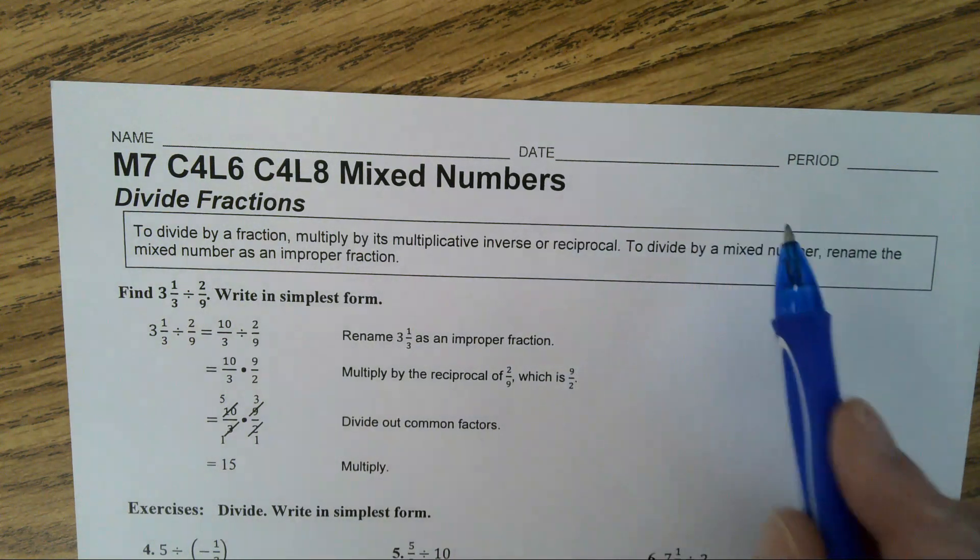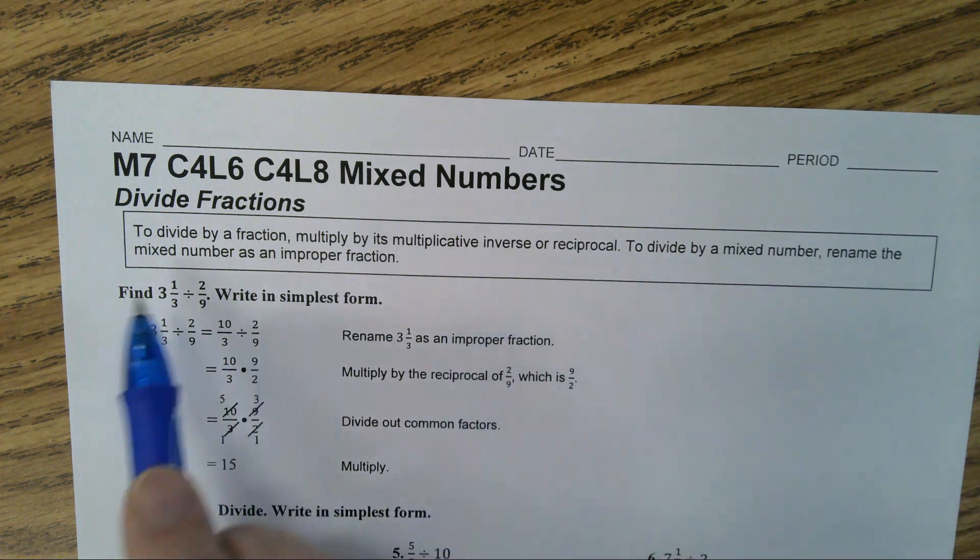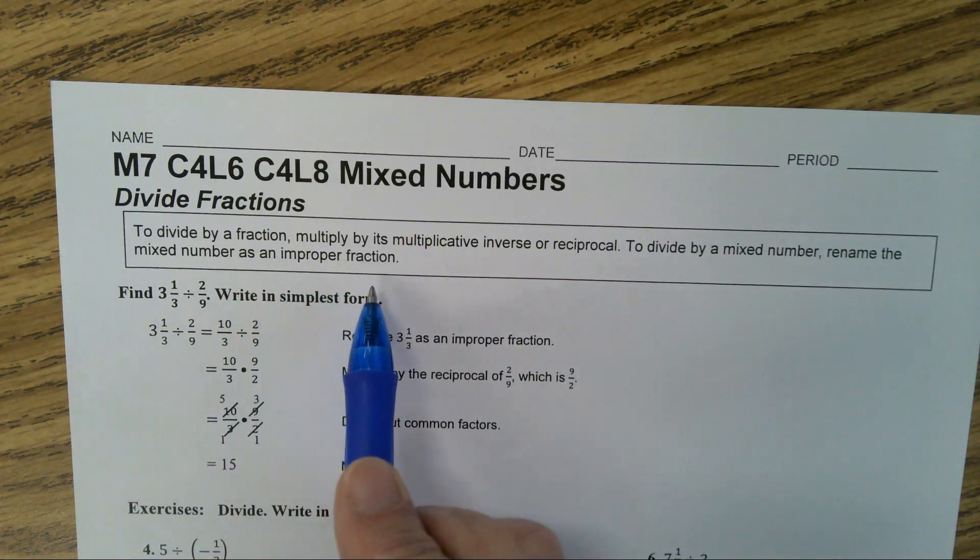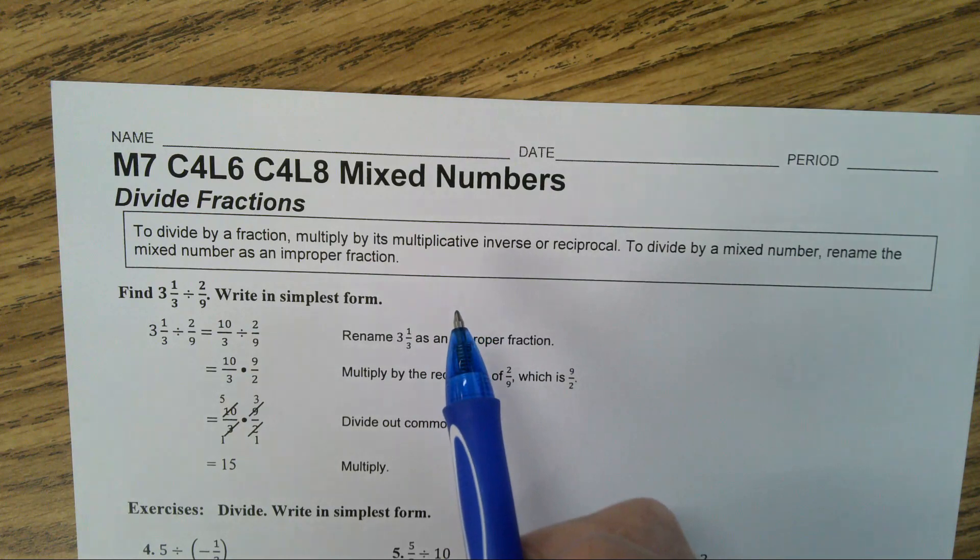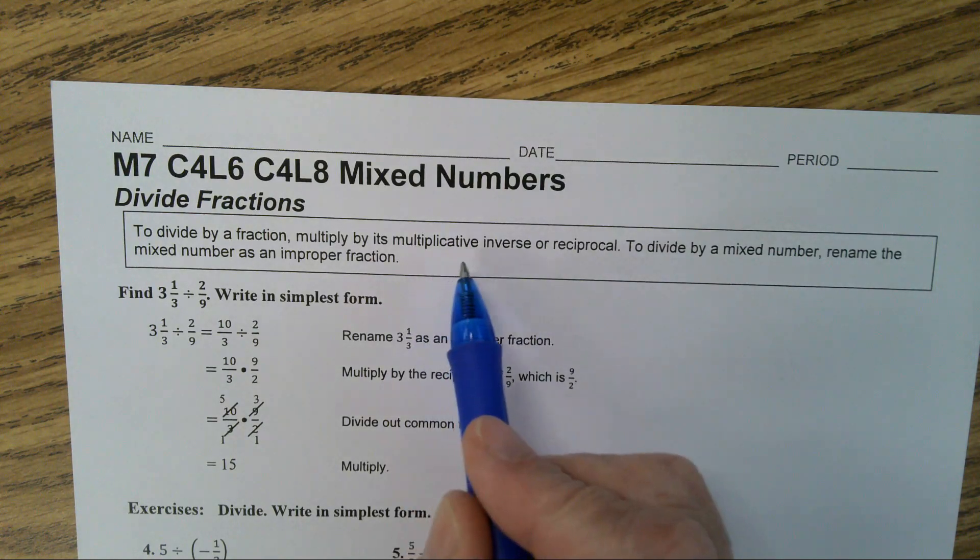Now, to divide a mixed number, rename the mixed number as an improper fraction. And then use its multiplicative inverse. Okay? Let's look at this example.